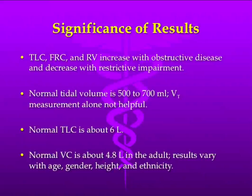If your normal total lung capacity is about 6 liters and a normal vital capacity is about 4.8 liters, then you have about 1.2 liters dedicated to residual volume. It does vary with age, gender, height, and ethnicity, but that's the basic idea. There's a percentage of your total lung capacity that should be dedicated to residual volume — the greater that percentage, the more air trapping you have.